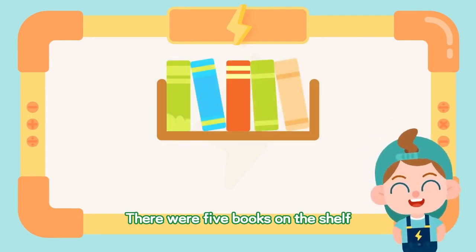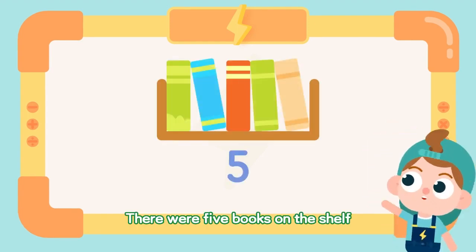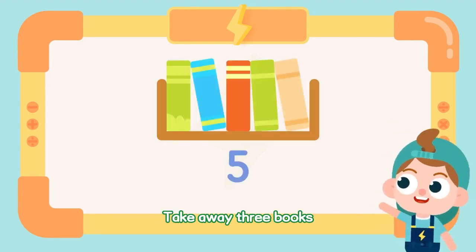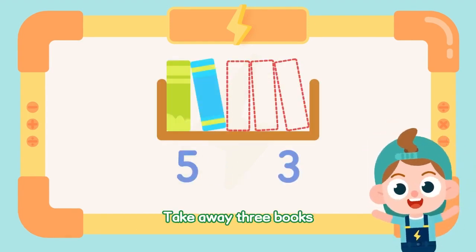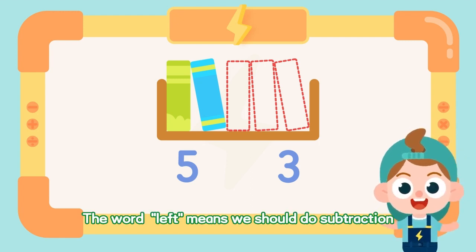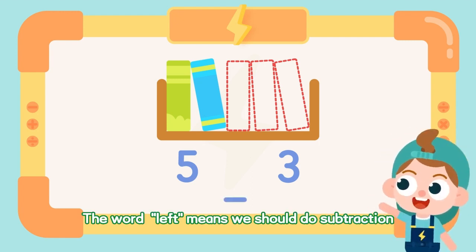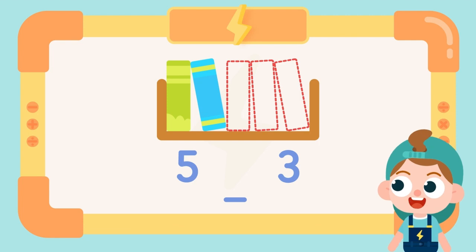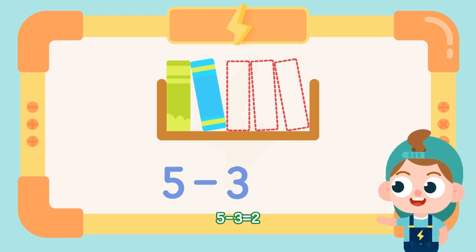There were five books on the shelf. Take away three books — how many books are left? The word 'left' means we should do subtraction. Five minus three equals two.